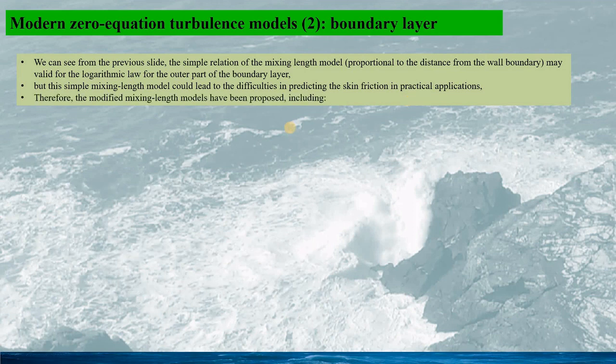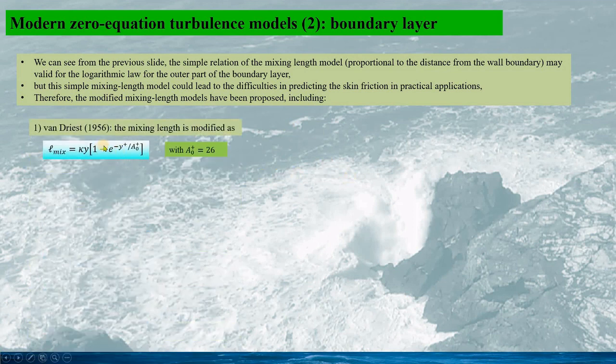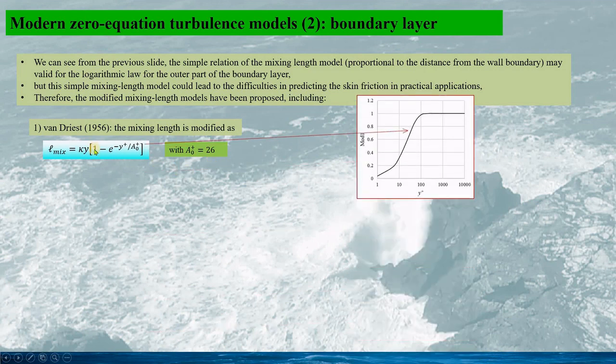Including van Driest in 1956. So the mixing-length model is modified by this. Here the a^+_0 equals 26. And if we plot out the function in the square brackets, so the modification of the mixing-length is only for the small y^+. We can see the modification is significant when y^+ is smaller than 100.